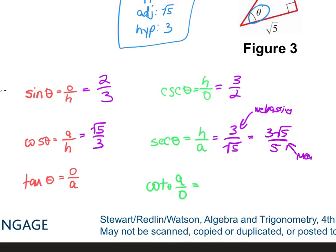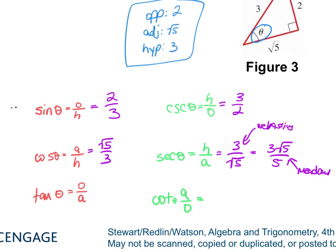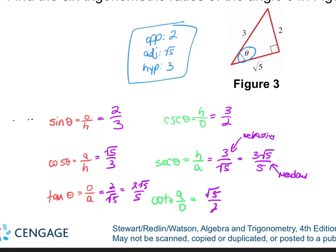Tangent is opposite over adjacent, so it's 2 over root 5. That's okay for WebAssign, but for me it needs to be 2 root 5 over 5. And cotangent is square root of 5 over 2. Once you label the sides and write out your trig functions, do this 4 or 5 times on your homework and then you don't have to think about it — it's super easy.